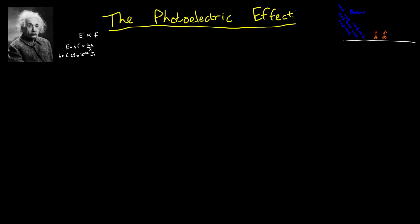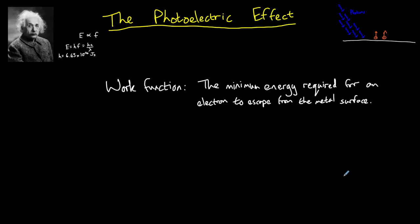The electron can only escape from the surface of the metal if the energy is large enough. This is known as the work function. The work function is the minimum energy needed for an electron to escape from a surface of a metal and it uses the symbol phi.